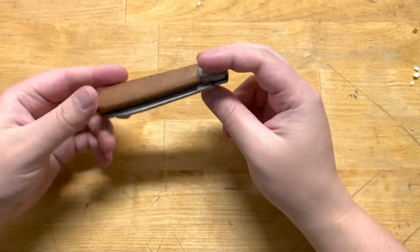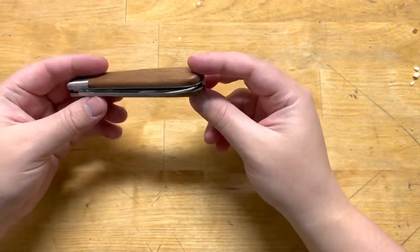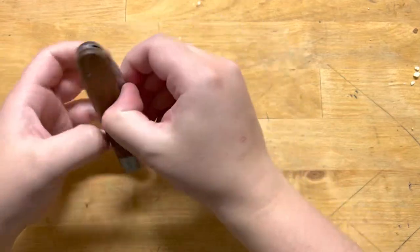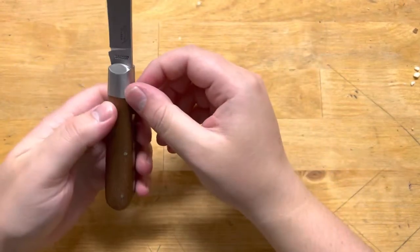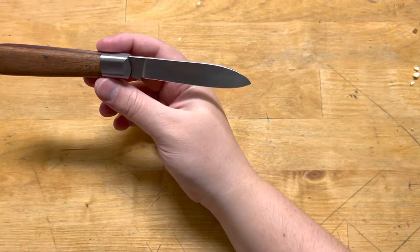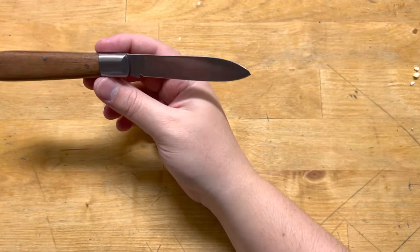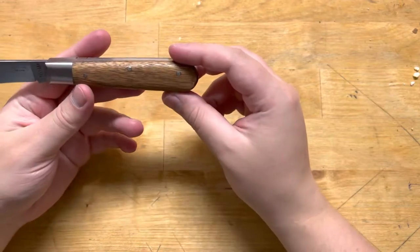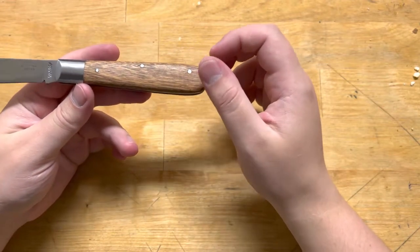Today we are looking at and doing a first impressions of the Otter Messer. I believe this is their large traditional in Sapellywood. It's called the Tasse Meister.